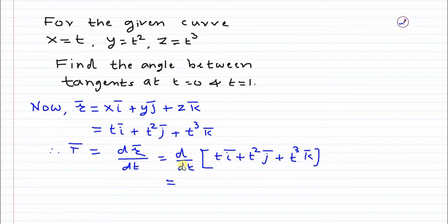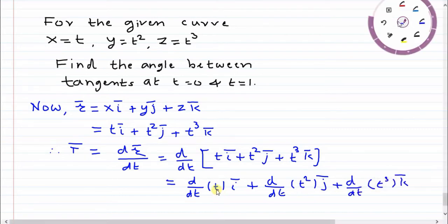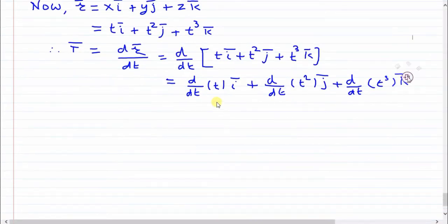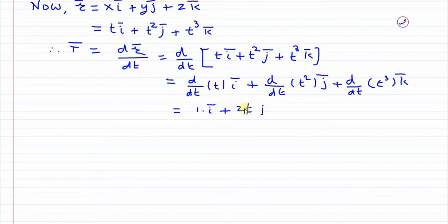So now we will differentiate these terms with respect to t. This is derivative of t plus derivative of second term that is t square plus derivative of t cube. Now t with respect to t derivative is 1, derivative of t square is 2t, and derivative of t cube is 3t square.